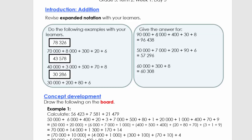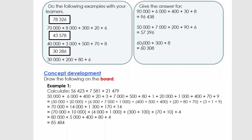Now we're going to do it the other way around. If we have 90 000 + 6 000 + 400 + 30 + 8, adding this all together we get 96 438. Similarly, 50 000 + 7 000 + 200 + 90 + 6 gives us 57 296. The next example is 60 000 + 300 + 8 — note there is nothing in the thousands or tens position — so we get 60 308.